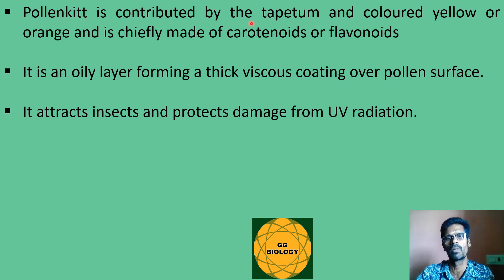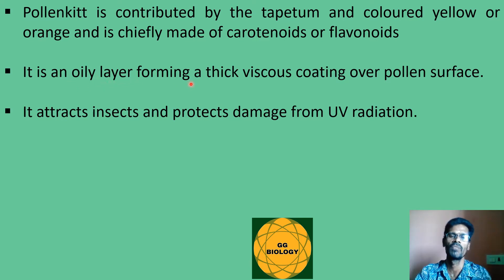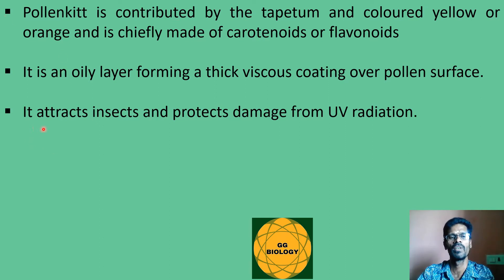The next component is the adhesive substance called pollen kit, found on the exine. It is contributed by the tapetum and is usually colored yellow or orange due to pigments known as carotenoids and flavonoids. Pollen kit is oily in nature, forming a thick viscous coat over the pollen surface. It is responsible for attracting insects toward the flower and also protects pollen grains from ultraviolet radiation.